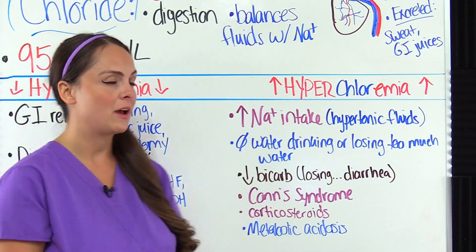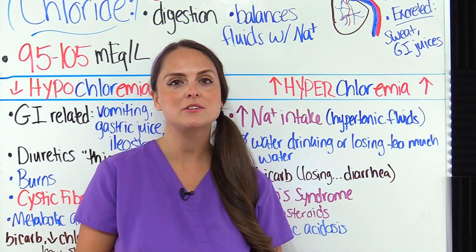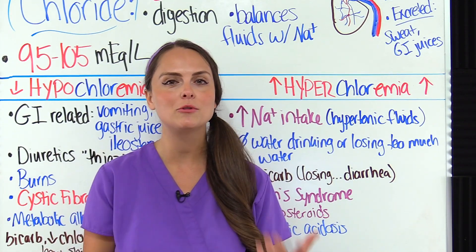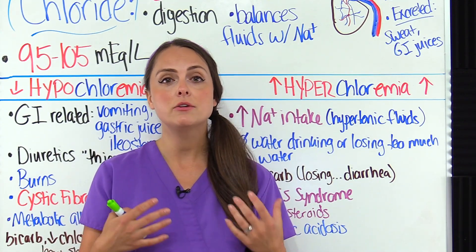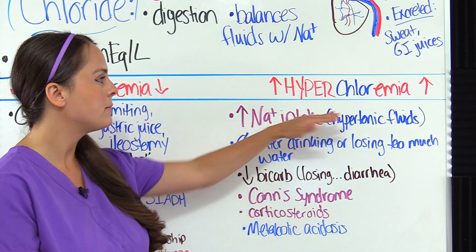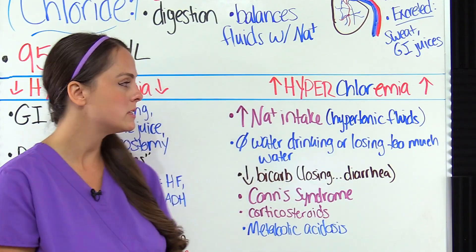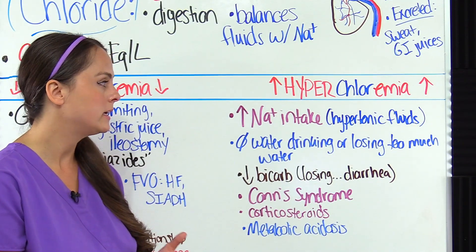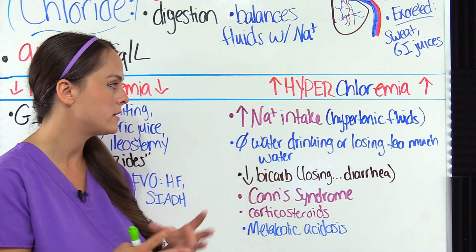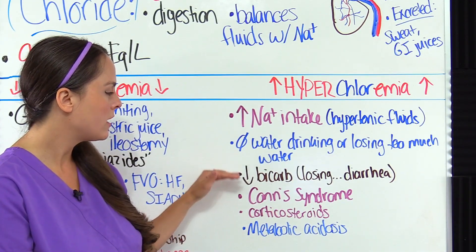Now let's look at hyperchloremia. What can drive that chloride level up? It's going to be similar to the causes of hypernatremia, because sodium and chloride really go hand in hand. Consuming too much sodium can drive the chloride level up, like giving the patient too many hypertonic solutions. Also, not drinking enough or losing too much water can dehydrate the patient, raising the sodium level along with the chloride.